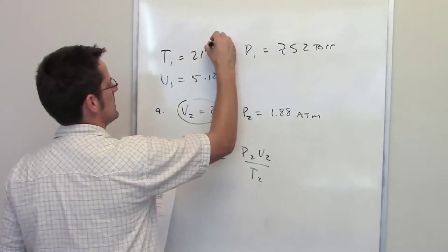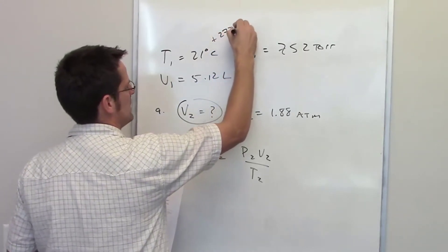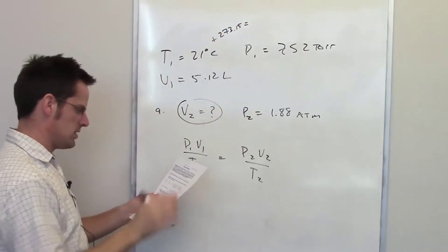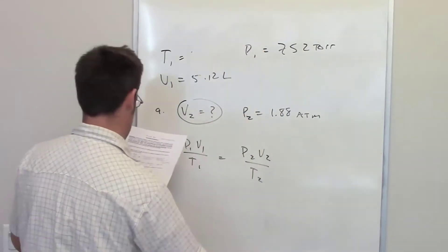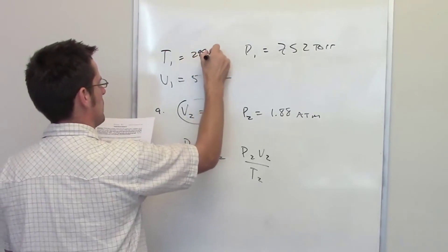So if you take 21 degrees Celsius and you add 273.15, that will give you the number of Kelvins, which ends up being 294.15. So I'll go ahead and replace that, 294.15.